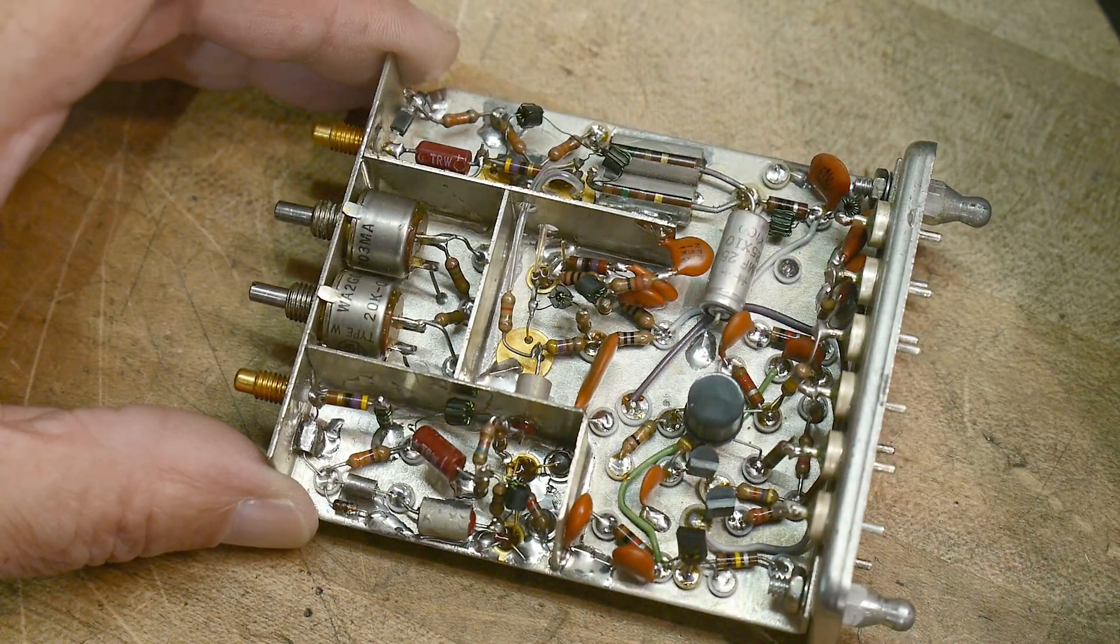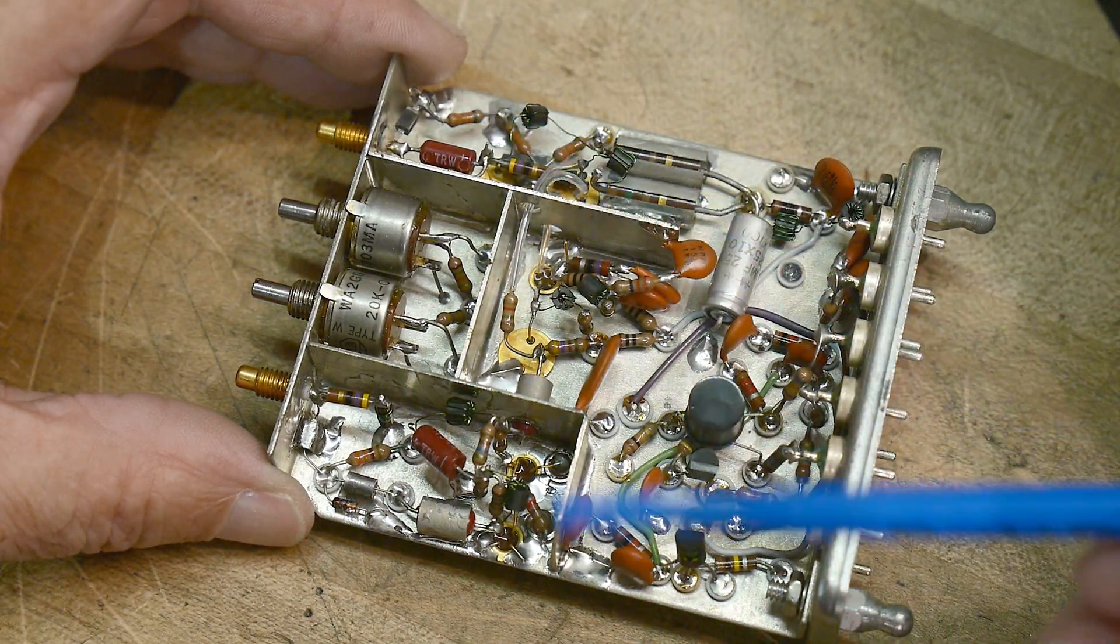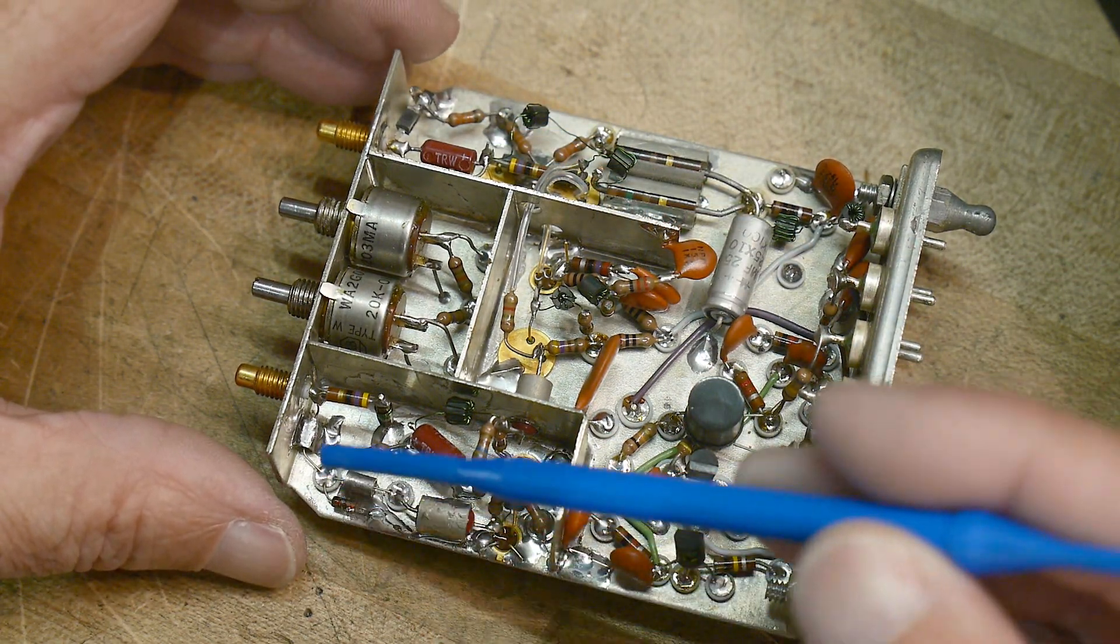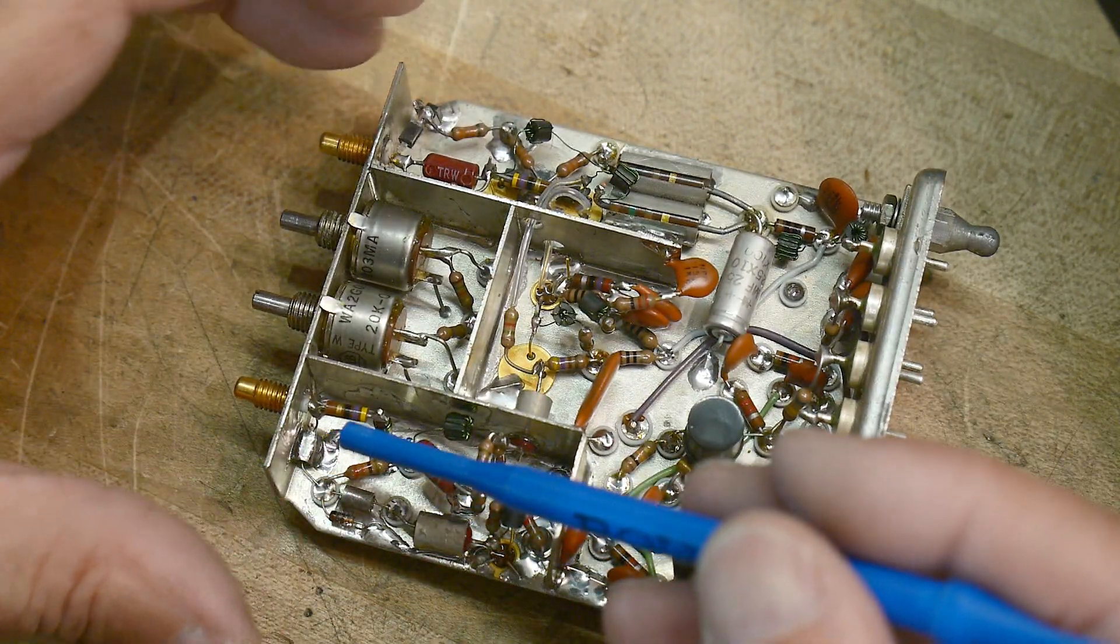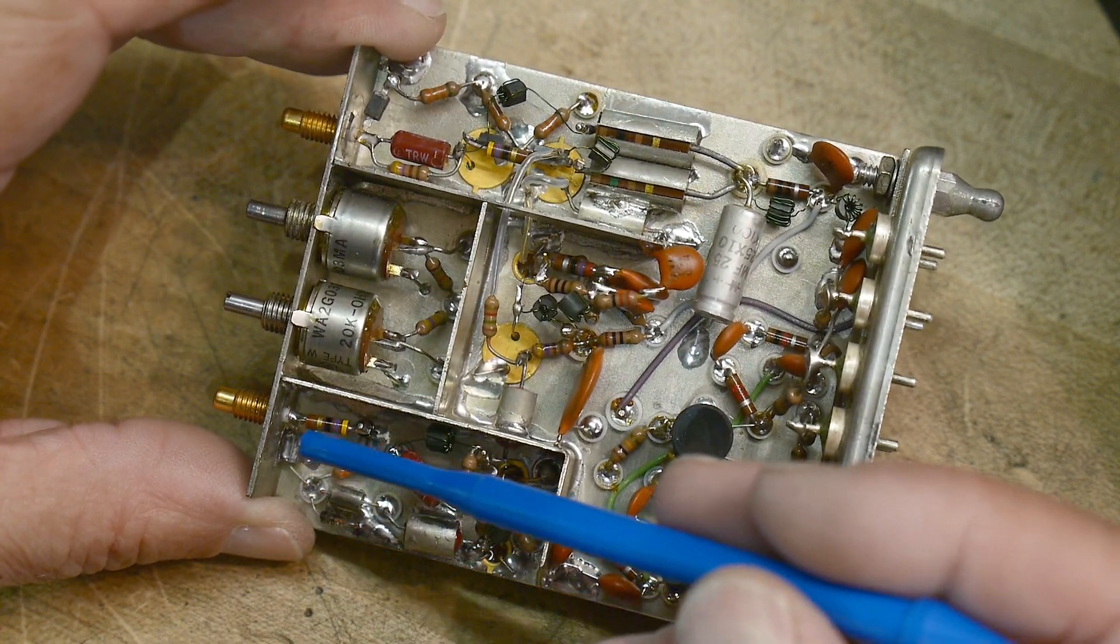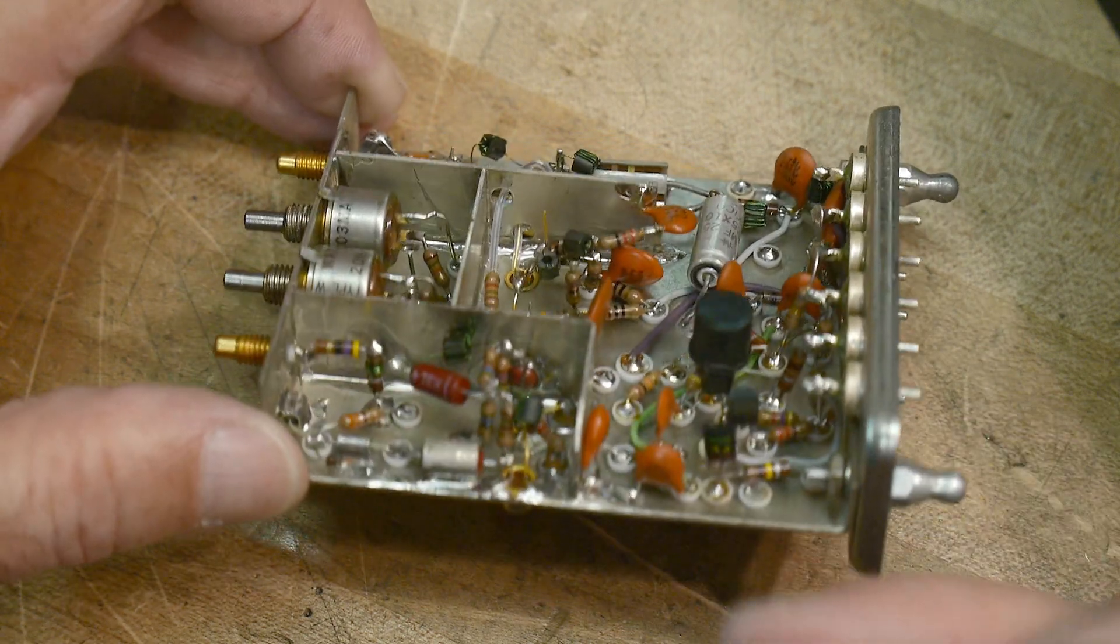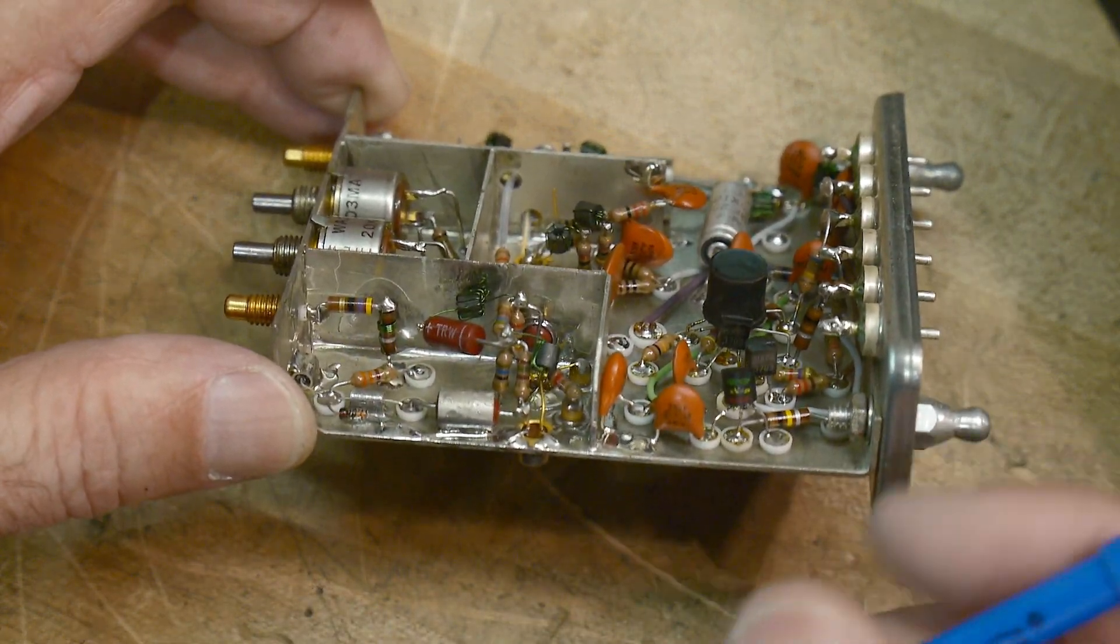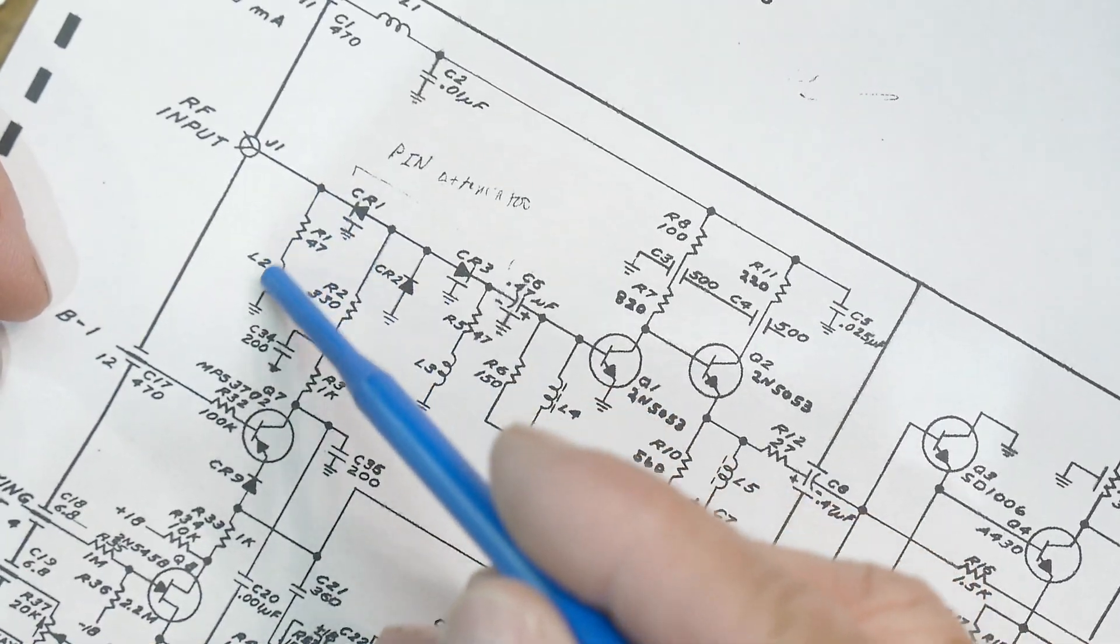So anyway, this is the input side and this is the output side. The input comes here and goes through a - 4.7 or 47 - probably 47. Yeah, a 47 and an inductor to ground. And that's what we see here: 47, inductor to ground, then it goes through a magic diode.